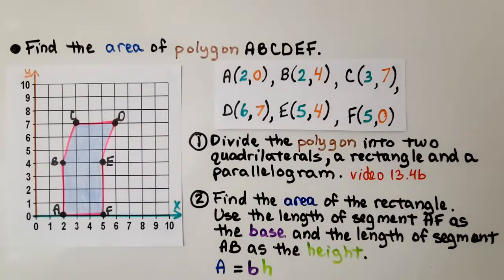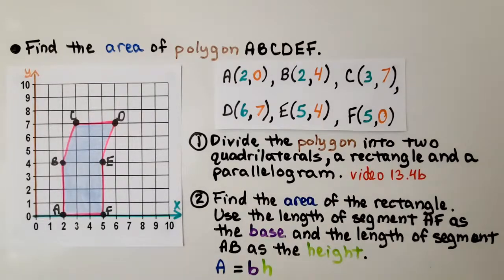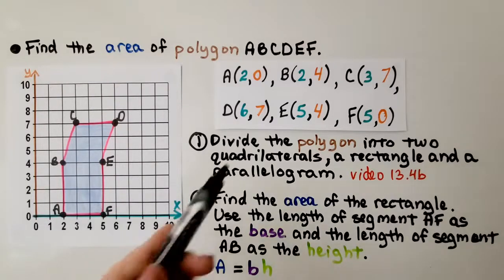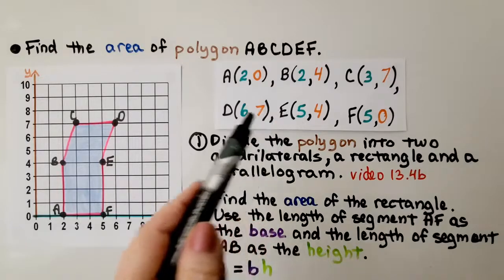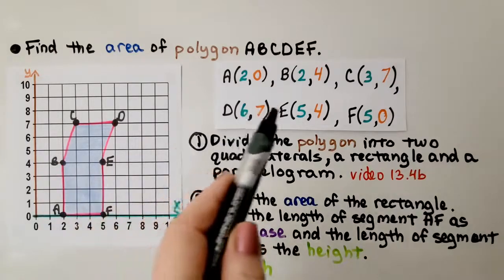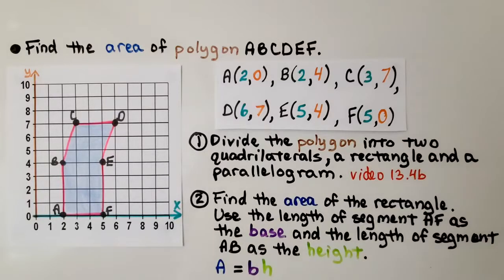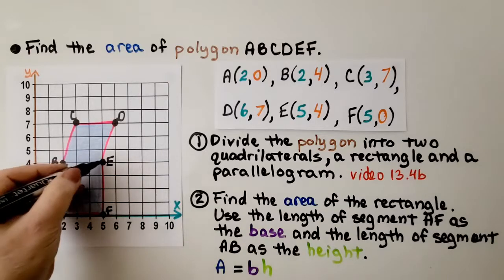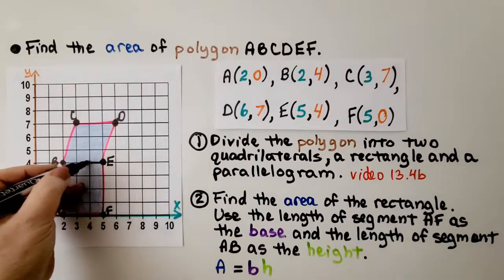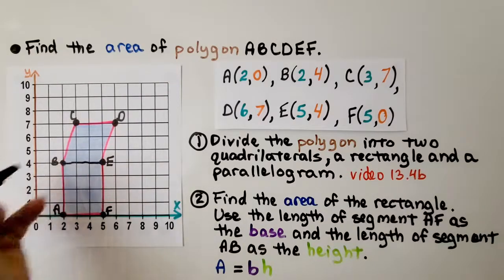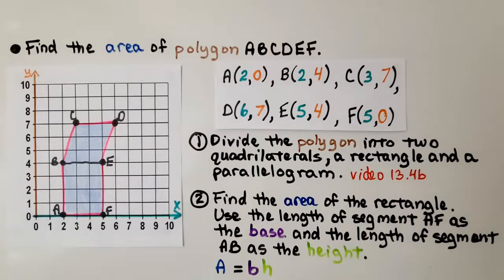We need to find the area of this polygon A, B, C, D, E, F, and we have the points as ordered pairs for each one. The first thing we do is divide the polygon into two quadrilaterals. We're going to come straight across here and divide it into two quadrilaterals: a rectangle and a parallelogram.